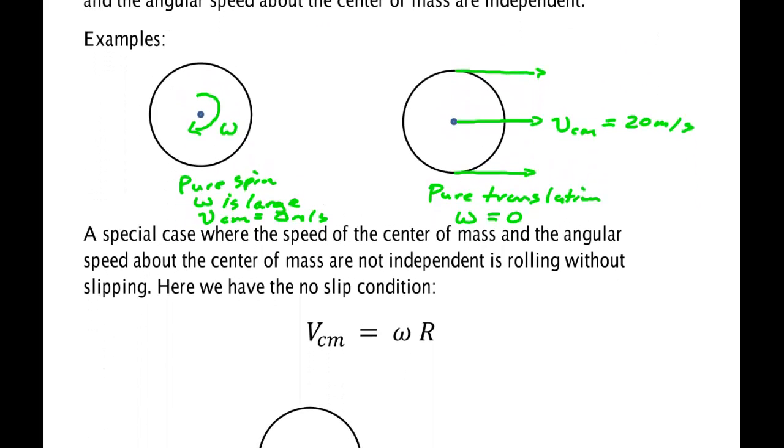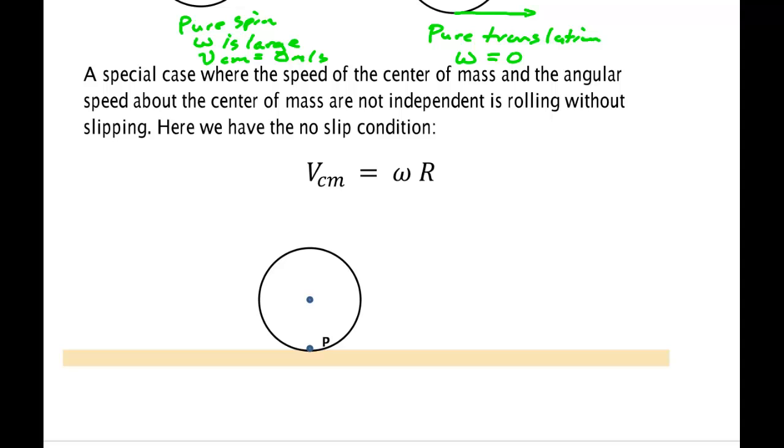This is called the no-slip condition, which we have already covered. The no-slip condition says that the speed of the center mass is equal to the angular speed times the radius. So if you know this distance and you know this speed, which is the same as the speed of the spinning disk, then you know this.